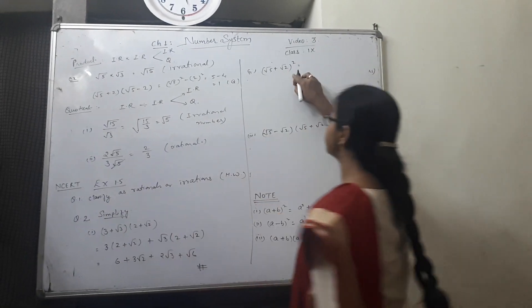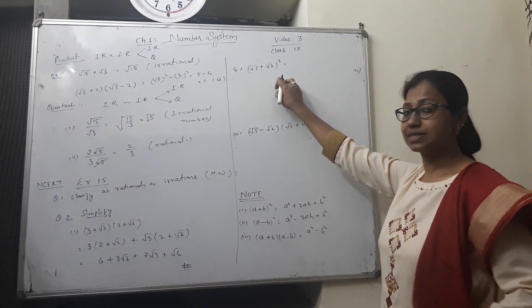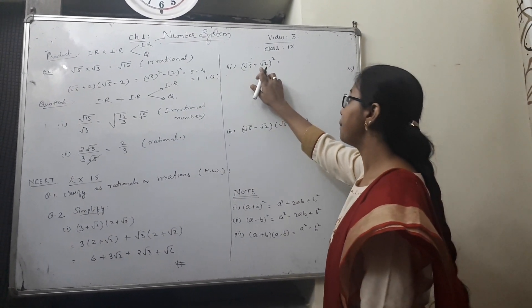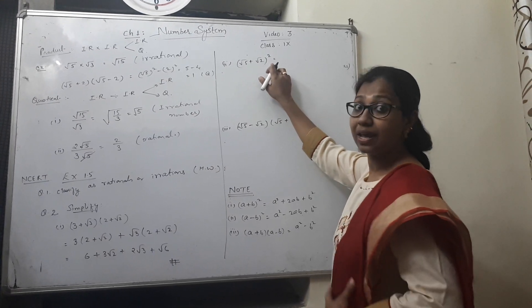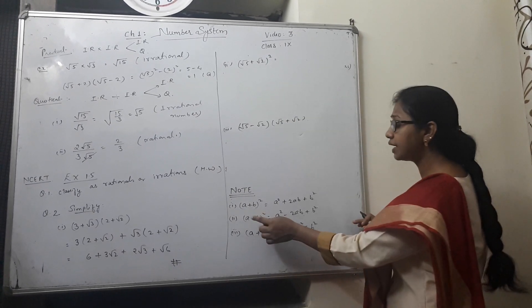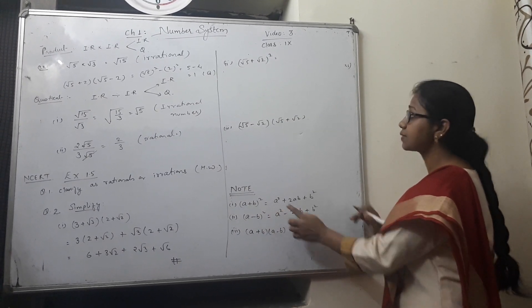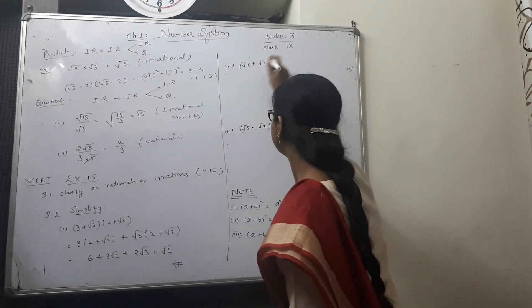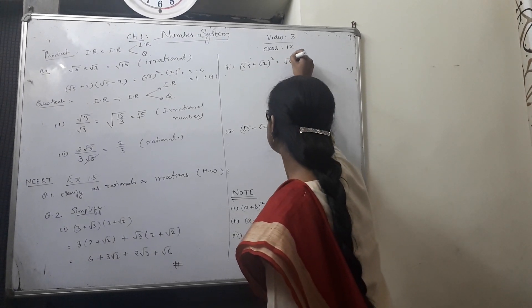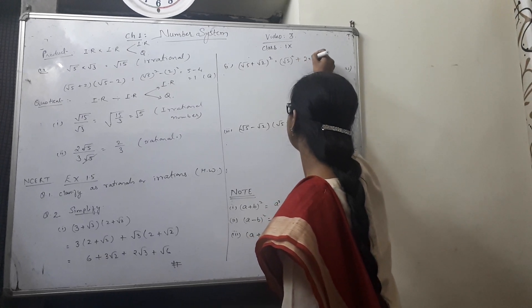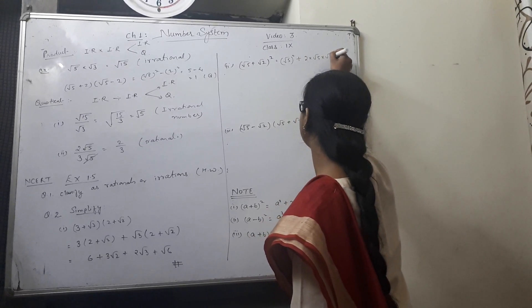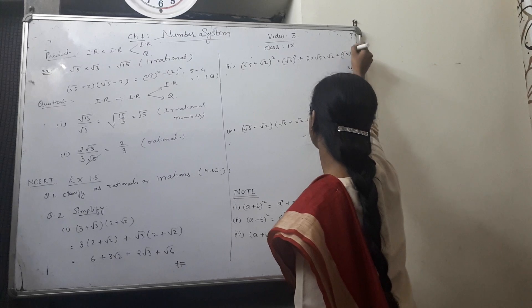Second part of exercise 1.5. Root 5 plus root 2 whole square. Here we can use the identity. This gives you root 5 square plus 2 into root 5 into root 2 plus root 2 whole square.